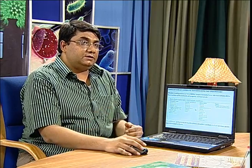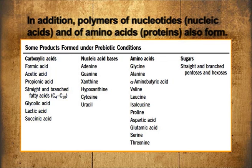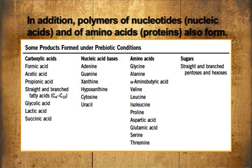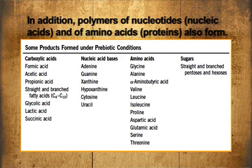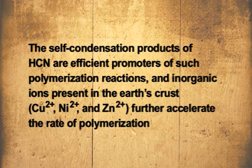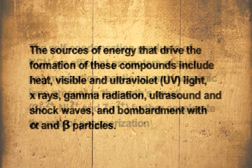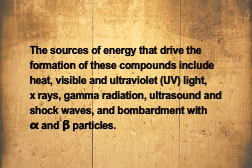Modern modifications of Miller's experiments showed the formation of hundreds of different organic compounds: many carboxylic acids, nucleic acid bases, many amino acids, sugars including some polymeric sugars. Most importantly, polymers of nucleotides - that is, nucleic acids - or polymers of amino acids - that is, proteins or peptides - were found to form under these conditions. The self-condensation products of HCN efficiently promoted such polymerization reactions, and inorganic metal ions present in the Earth's crust like copper, nickel and zinc ions further accelerated the rate of polymerization.